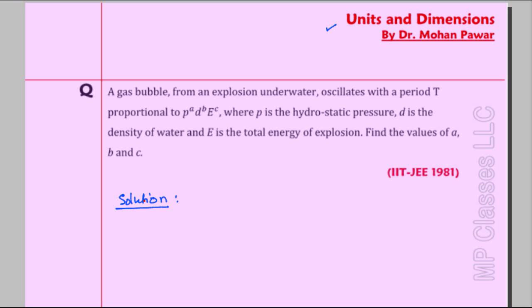We have the period T proportional to P to the power A, D to the power B, E to the power C. As you can see, there is one physical quantity on the left side called time period, and on the right side there is a product of three physical quantities. Whenever there is a product and powers are given, we do these kind of problems in dimensional analysis where dimensional homogeneity problems are dealt.